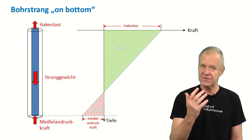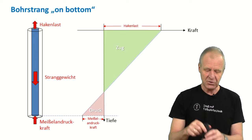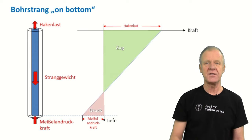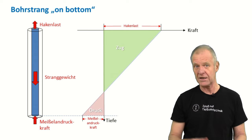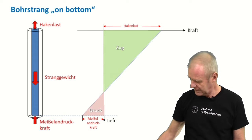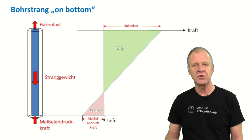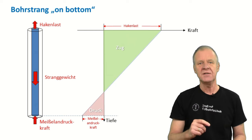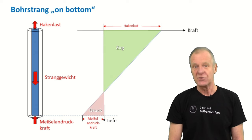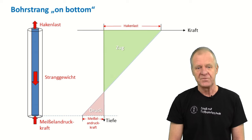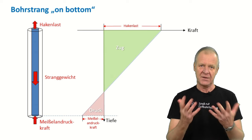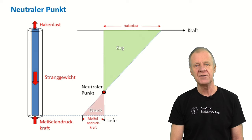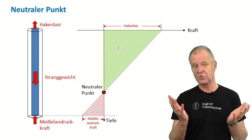The more weight we apply to the bit, the less hook load remains at the surface. So as we can see from this graph, the upper part of the drill string is under tension and the lower part is under compression. The point in the graph which separates the tension area from the compression area is called the neutral point.